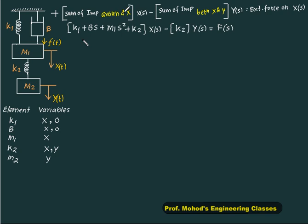Now our first equation is sum of impedance around x, multiplied by x of s, minus sum of impedance between x and y, y of s, equals to external force of x of s.